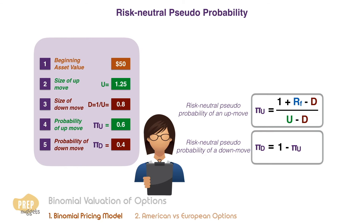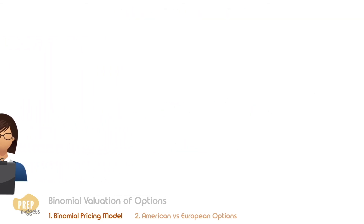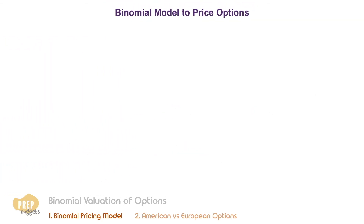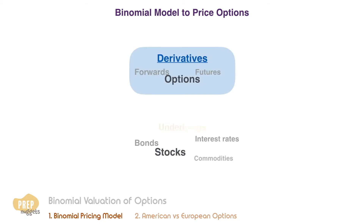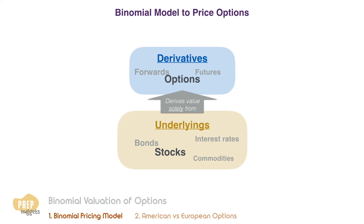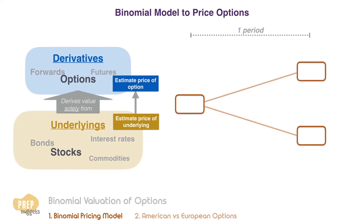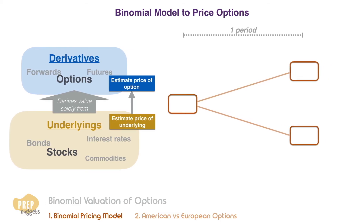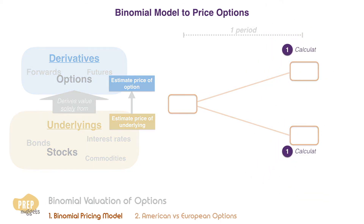So how does the binomial tree help us decide on the value of an option? We know that options are derivatives, in which their performance is based solely on the underlying. So by estimating the future price of the underlying we can effectively estimate the price of the option now. To do that we follow a three-step process using the binomial model. The first step is to calculate the payoff of the option at maturity in both the up move and down move states.